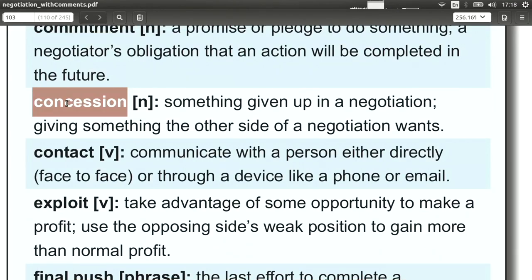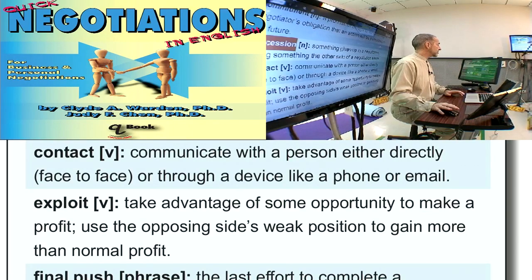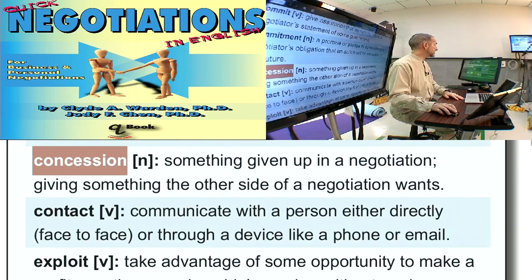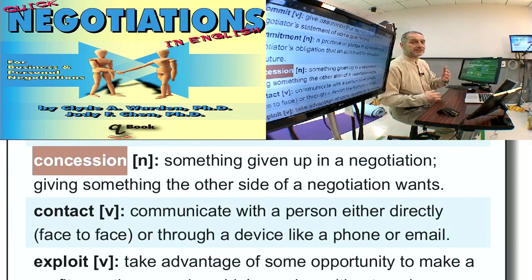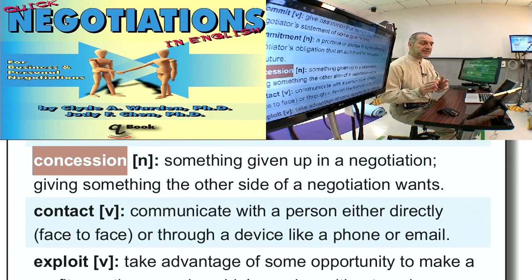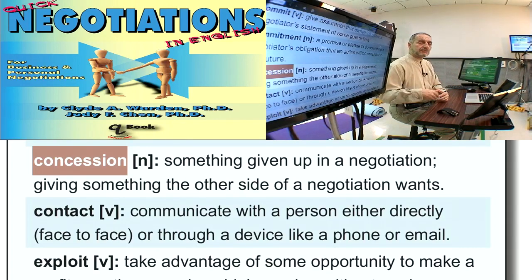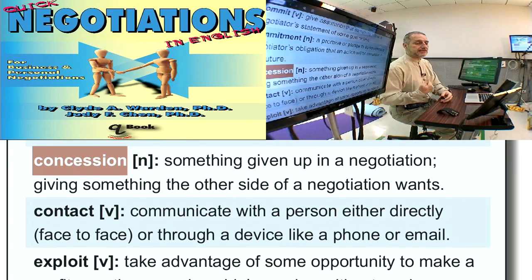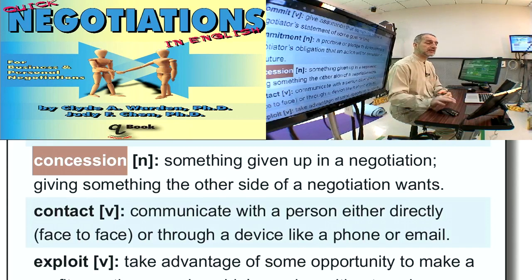Concession is giving something up. A negotiation cannot exist without two sides having some things they agree on and some things they don't agree on. If they don't agree on anything, you cannot have a negotiation. So the key is, the things you don't agree on — those few things that are left — you can make a concession. I can make a concession to you, meaning I give something up. Or you can make a concession to me, meaning you give something up to me.